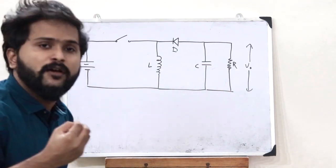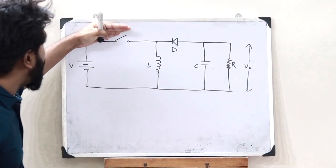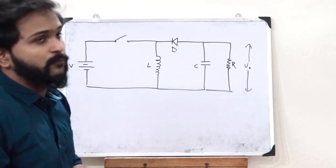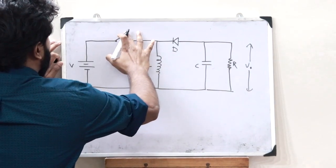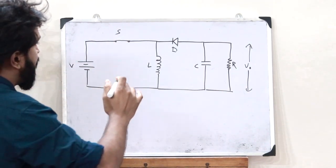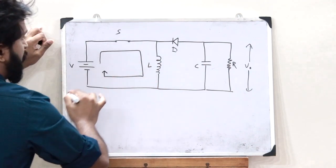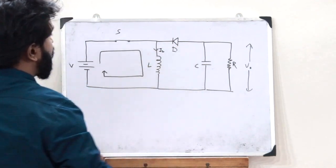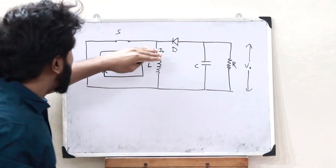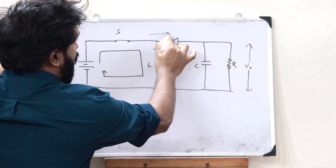This circuit can work in two states: the first state is when the switch is on and the second state is when the switch is off. When the switch S is on, current IL starts flowing in the loop through the source and inductor. The diode is in the reverse bias condition, so current cannot flow through it — it blocks current in that direction.